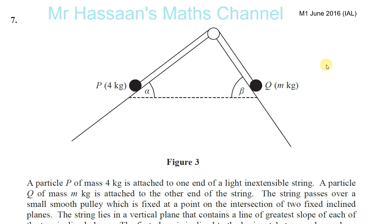A particle P of mass 4 kilograms is attached to one end of a light inextensible string. So you have P at 4 kilograms, with its weight acting vertically down — that's 4g. And Q has also got its weight acting vertically down, which is mg.